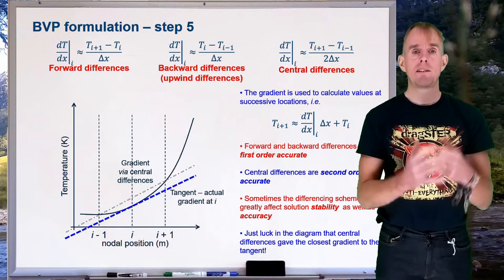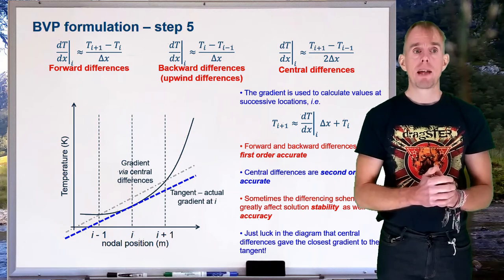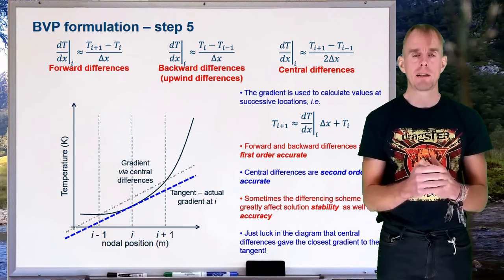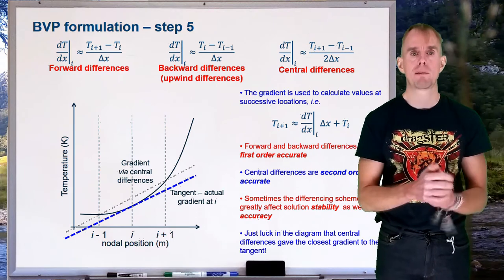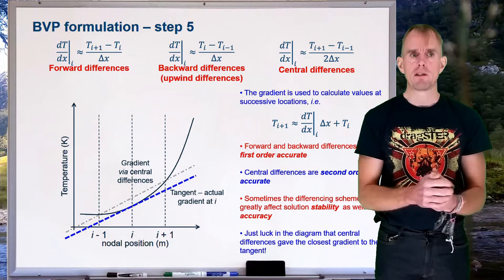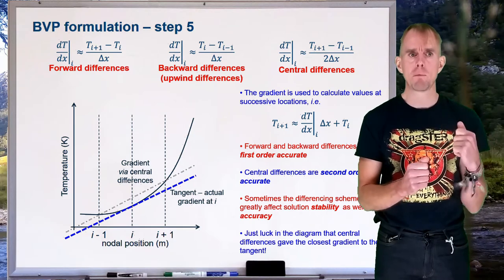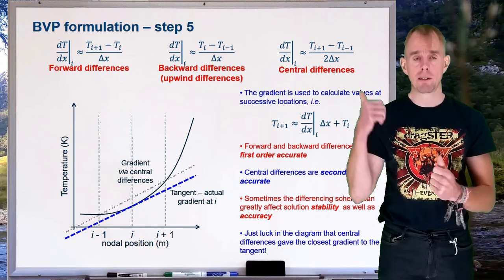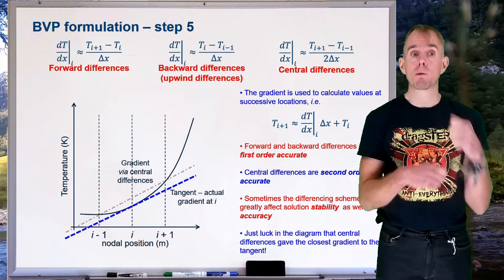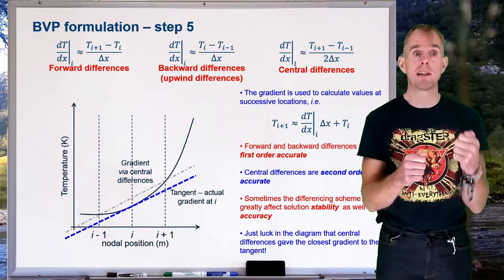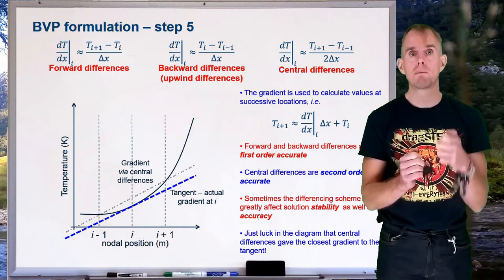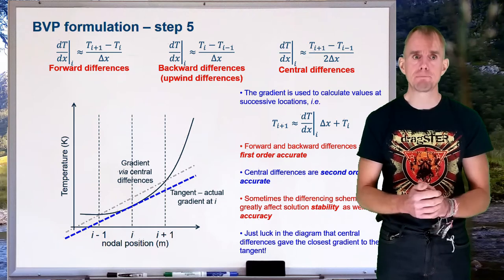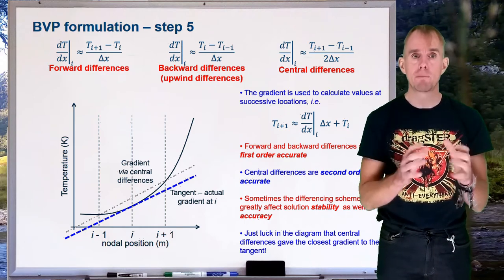Once we've calculated a gradient, we can use it to compute the temperature at the next node. In our conduction problem, we have a known temperature T1. We can calculate T2 by rearranging the differencing equation — using forward differencing illustratively: T2 = (dT/dx at node 1) × Δx + T1. Applying this recursively throughout the domain gives us the entire temperature profile.